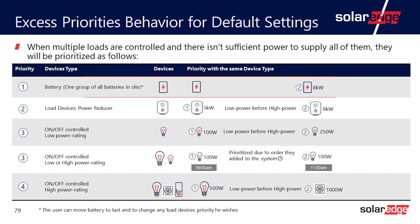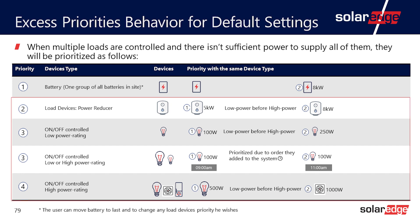Here is the excess PV priorities behavior for default settings. Battery comes first, then load devices such as a power reducer. Within the load devices, power reducers come before on/off devices.